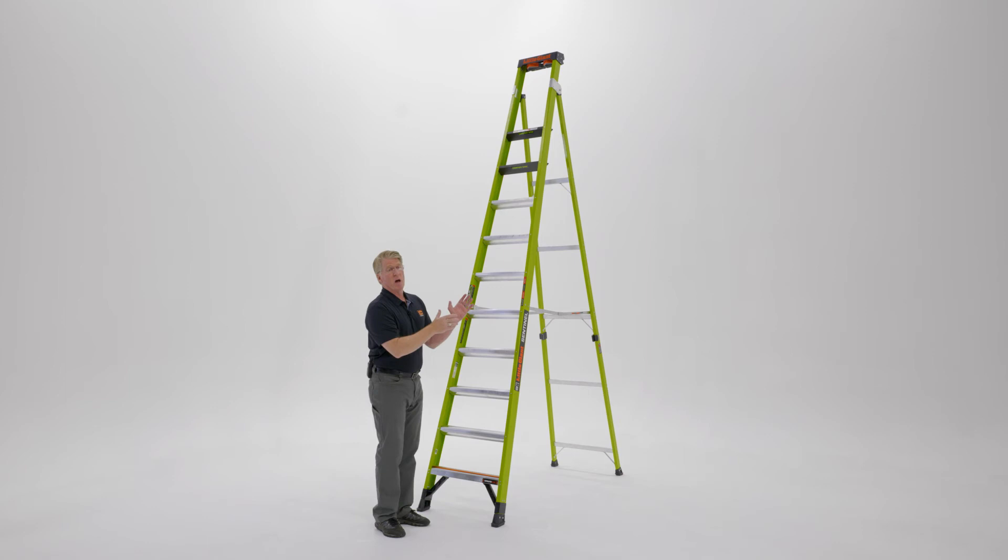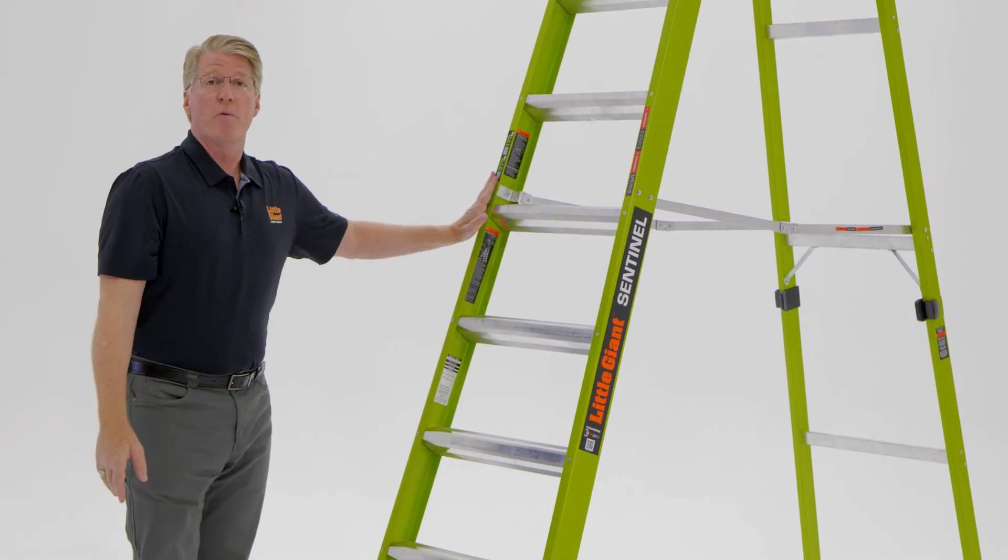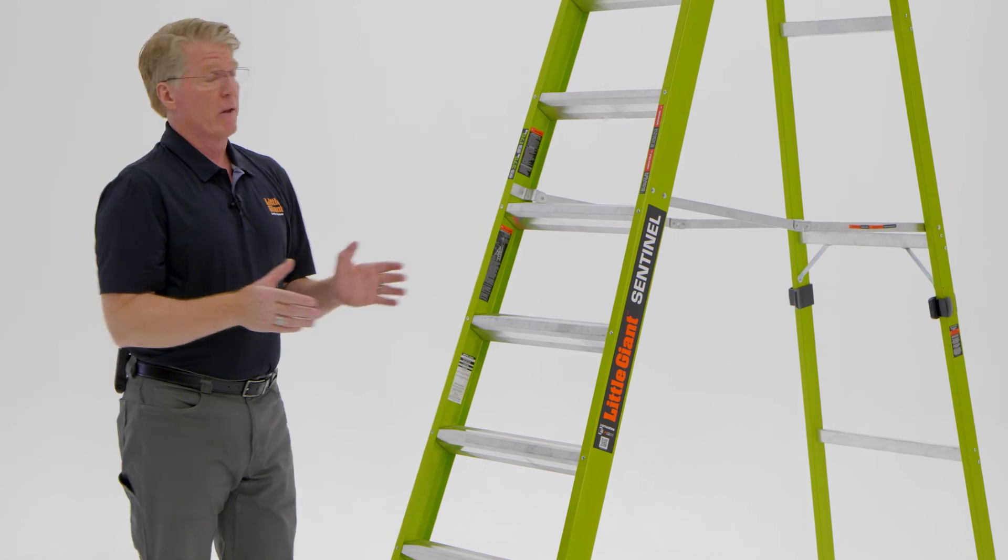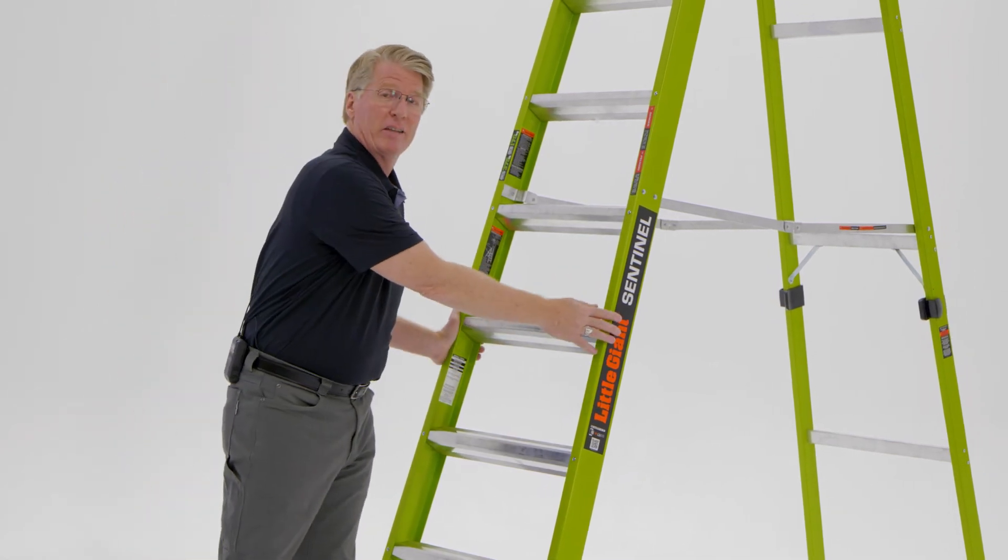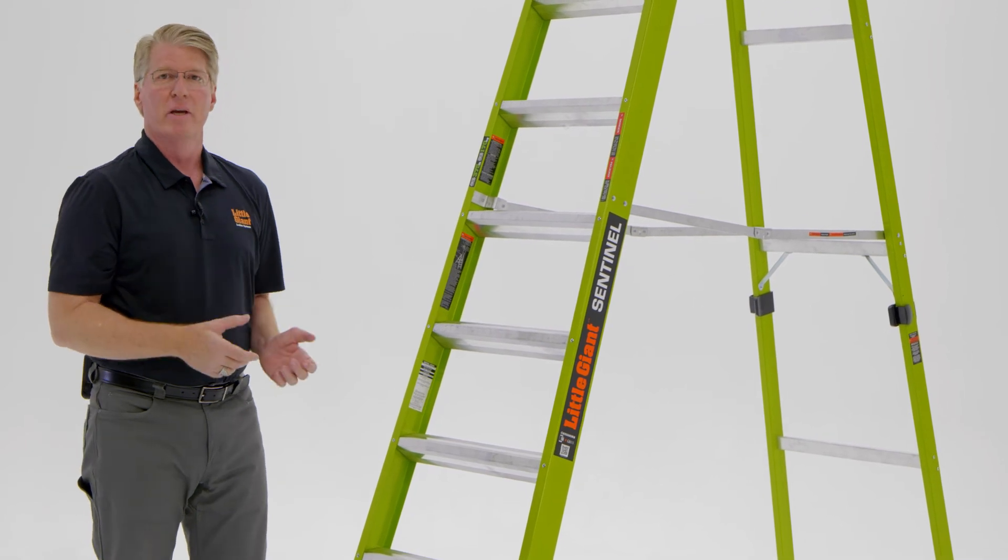The Sentinels come in a 10-foot model and a 12-foot model. They're both 375 pound rated, that's a 1AA rating. They're made of non-conductive fiberglass side rails in a high-vis green, which is the color that your eye sees the best.